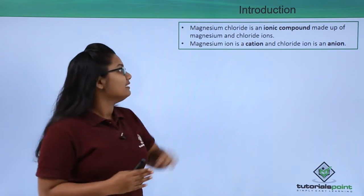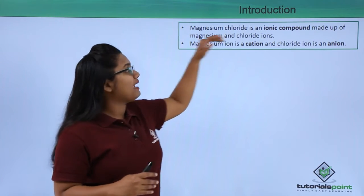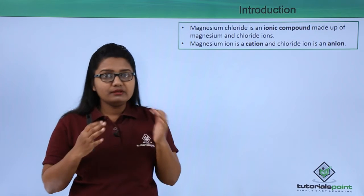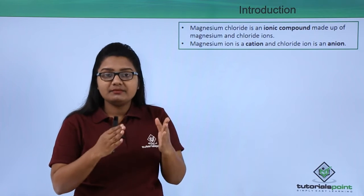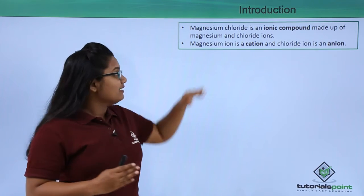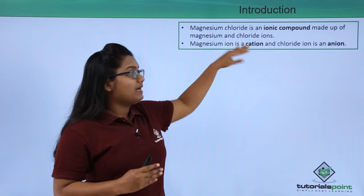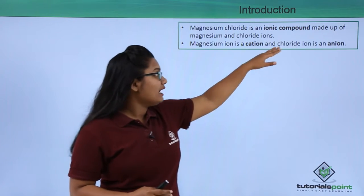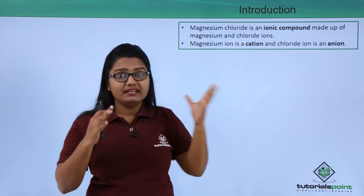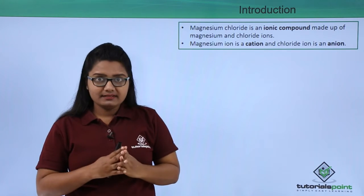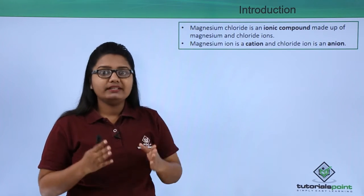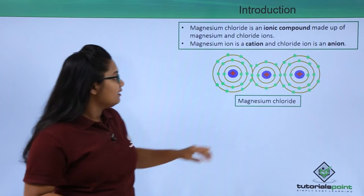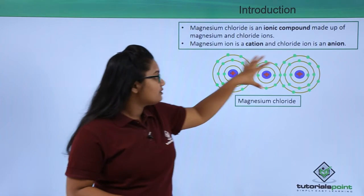Magnesium chloride is composed of magnesium and chloride ions. Magnesium ions are positively charged, so we call them cations. Chloride ions are negatively charged ions, and we call them anions.